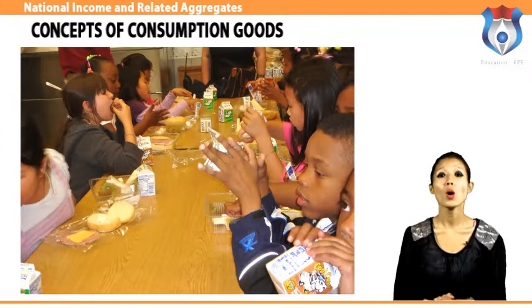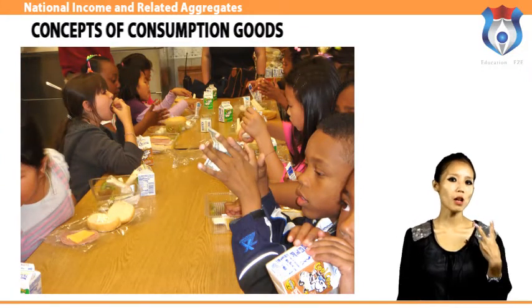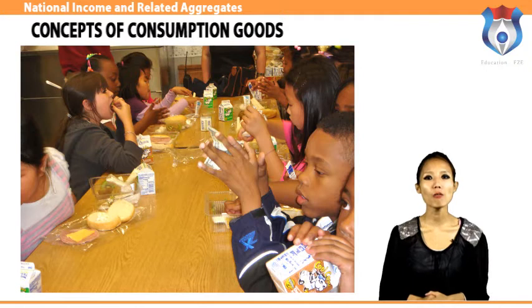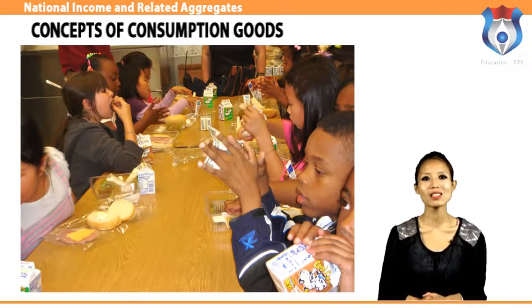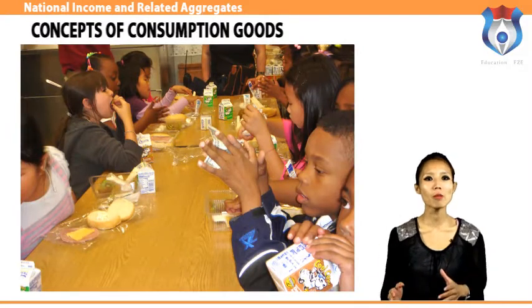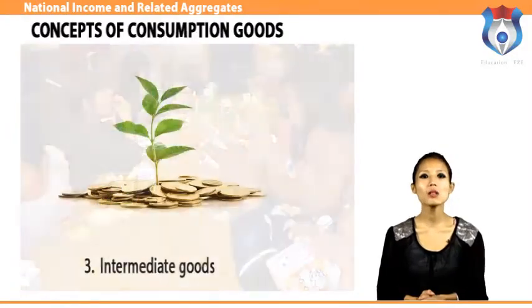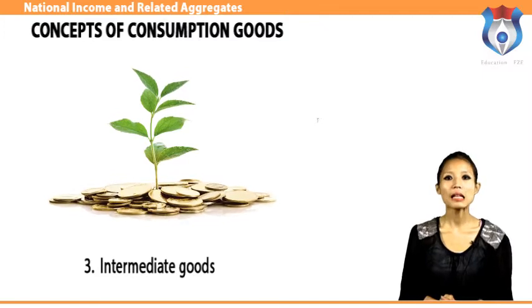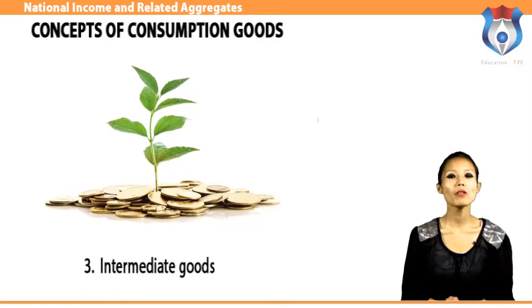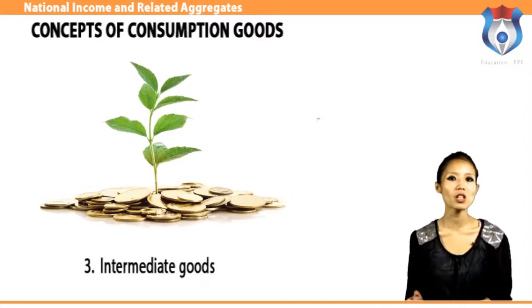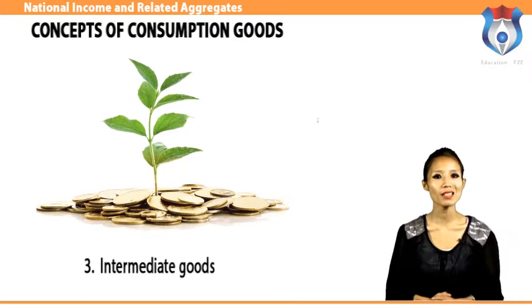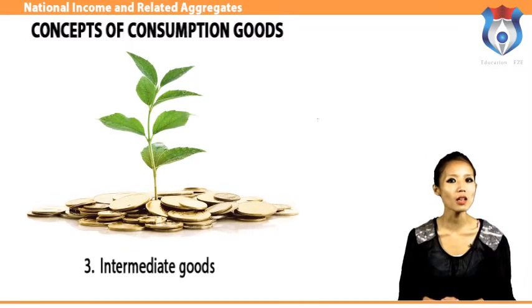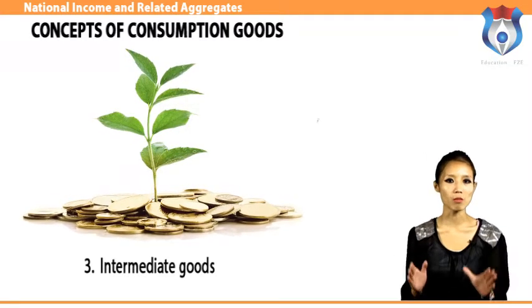Government purchases are expenditures made by the government sector on goods and services it uses when performing government functions. Examples of government purchases of the consumption variety include school lunches and congressional trips. Examples of the capital investment variety include a city buying a garbage truck or a government department buying a computer. Intermediate goods are all those goods used by producers in producing other goods — not demanded for their own sake but for their use in production. Raw materials and semi-finished goods are regarded as intermediate goods. The value of intermediate goods is not taken into account when estimating GDP.